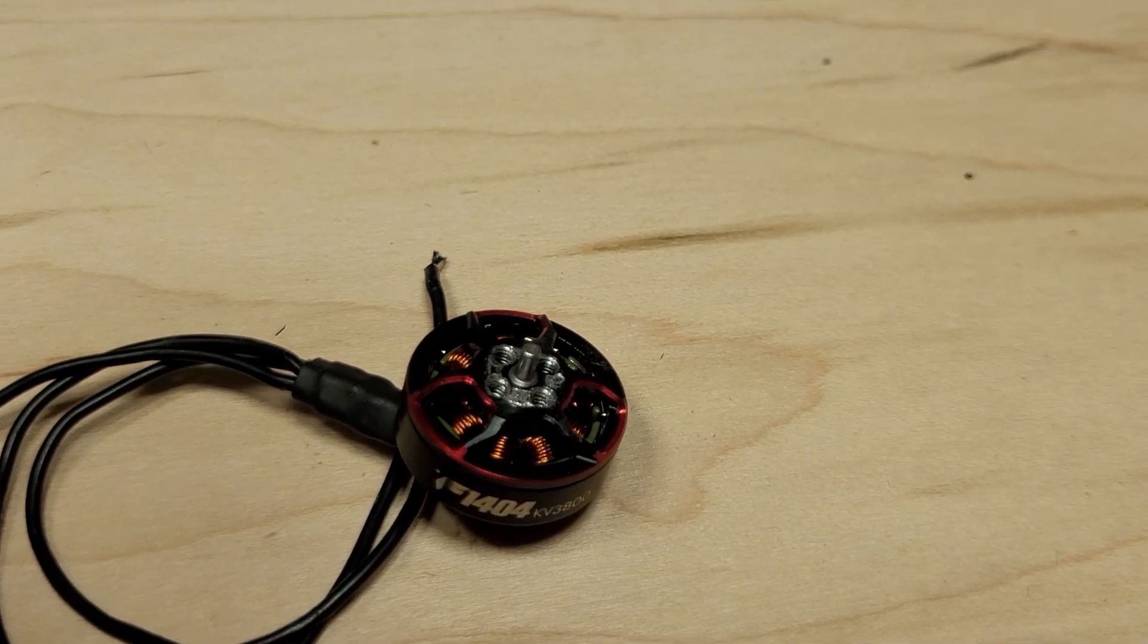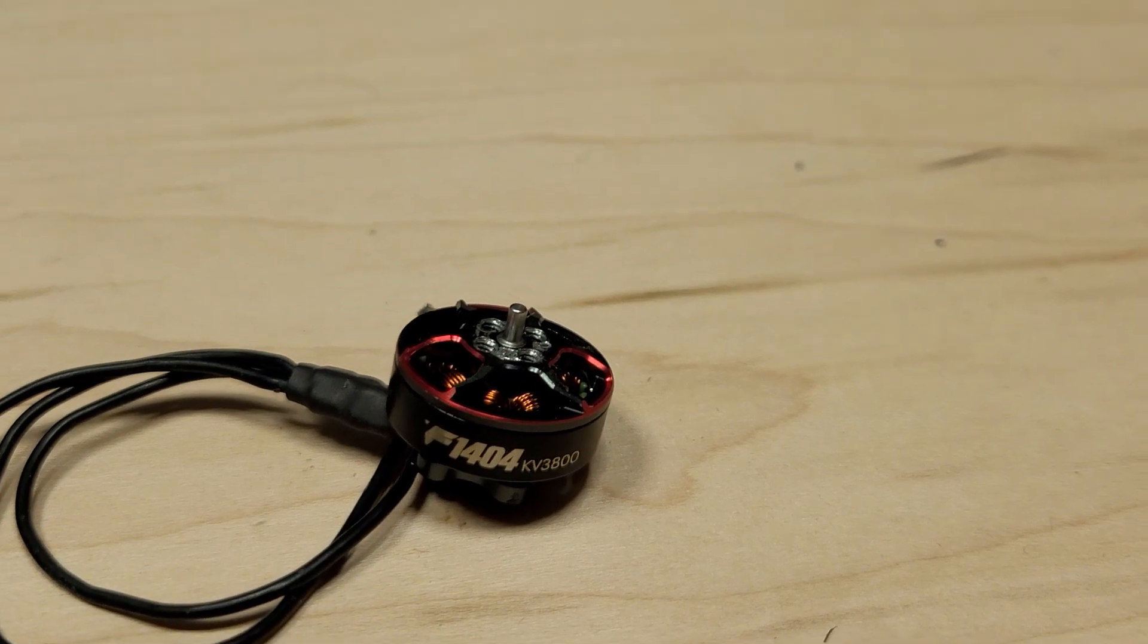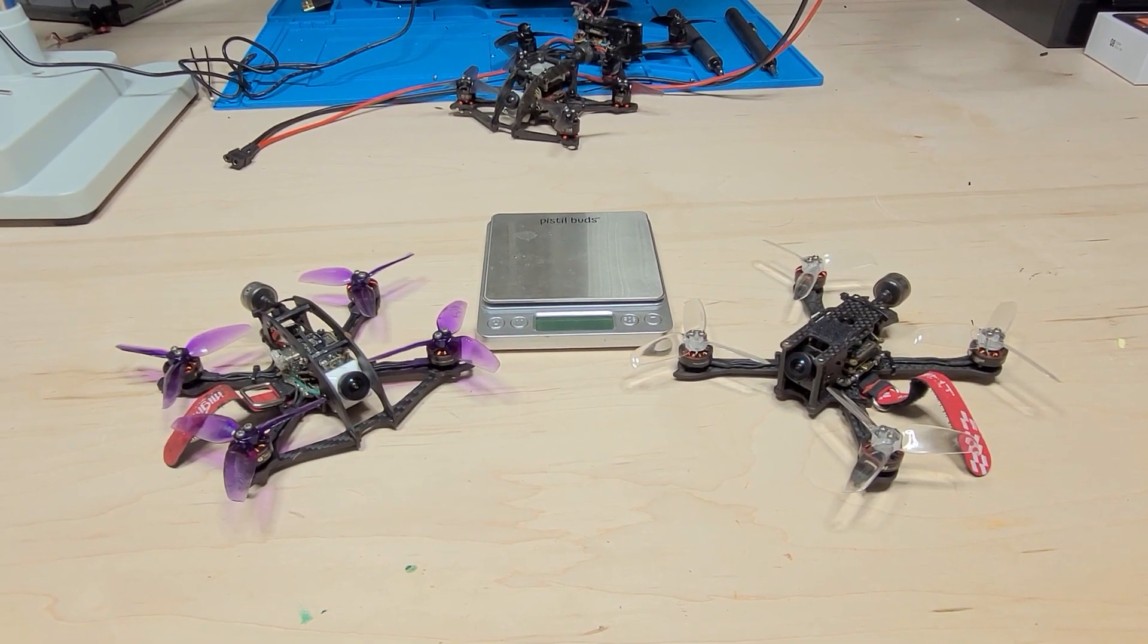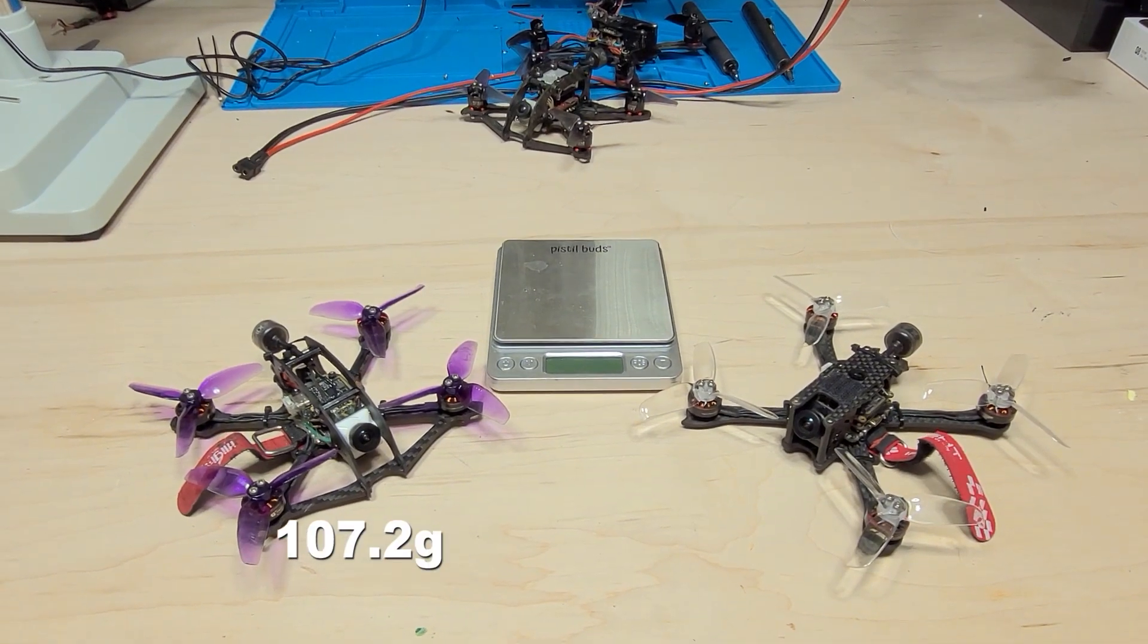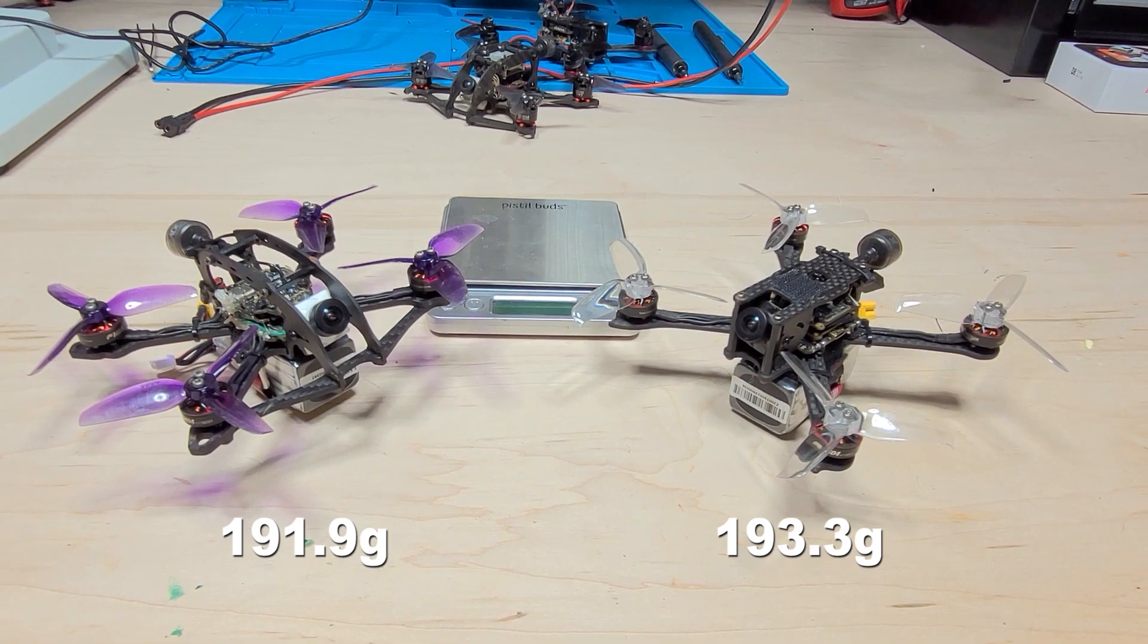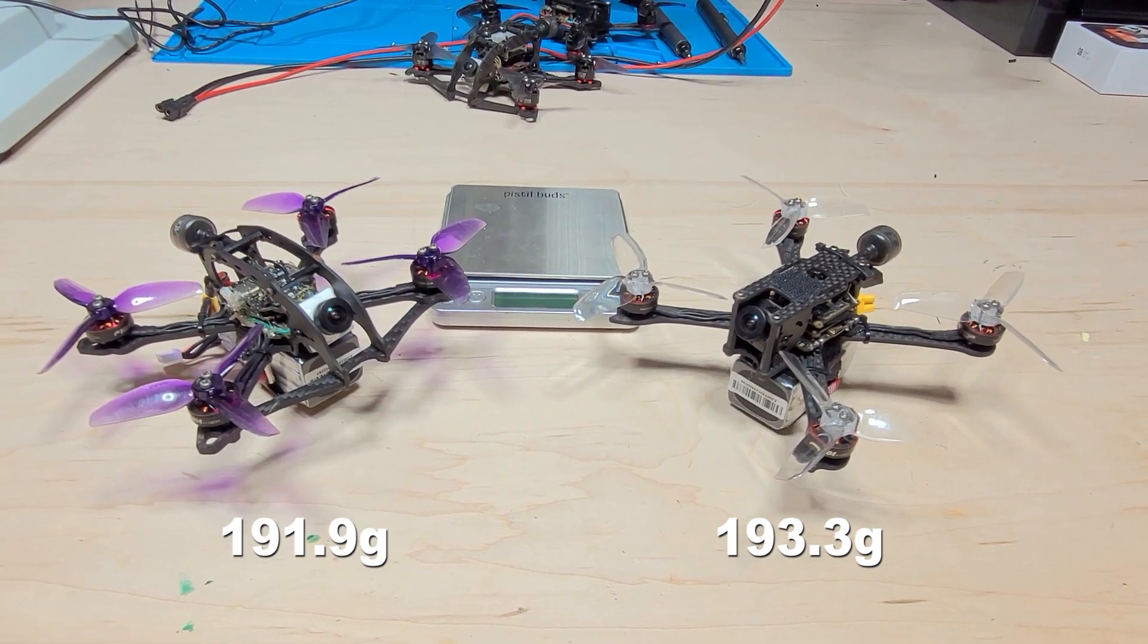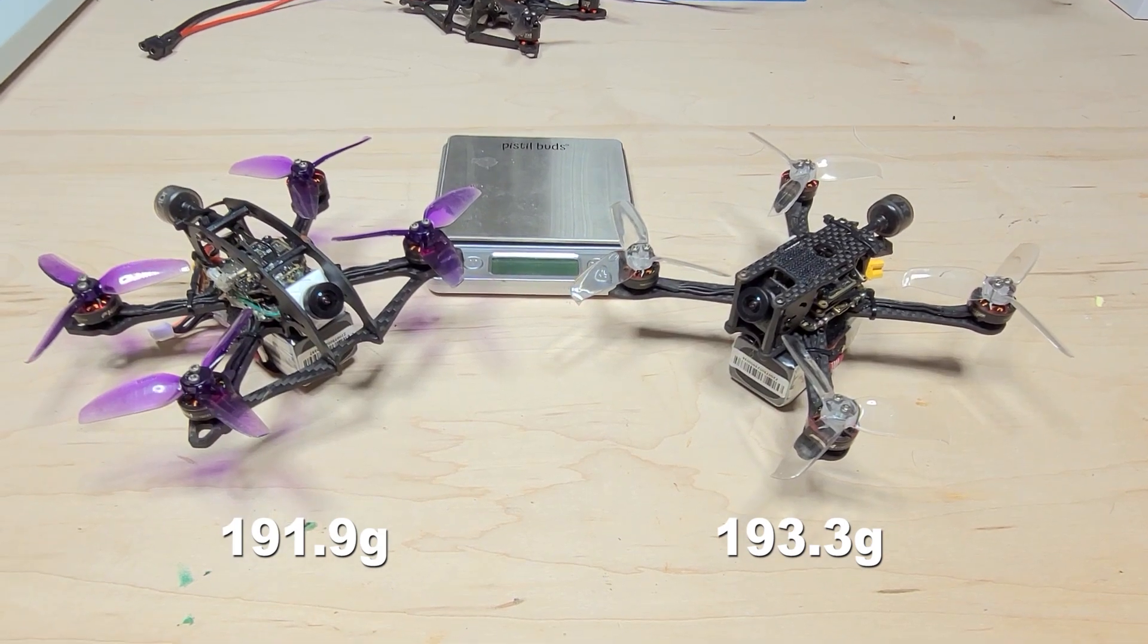The combination of lightweight motors and smaller battery requirements combined creates some really lightweight 3-inch build opportunities, and I've already put them on my two performance Vista HD 3-inch builds, coming in at a dry weight of 107.2 and 108.5 grams each, or 191.9 and 193.3 grams all-up weight with the 750mAh battery, which actually feels a bit overkill for these motors.